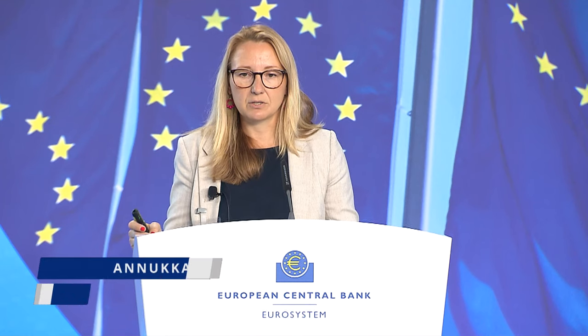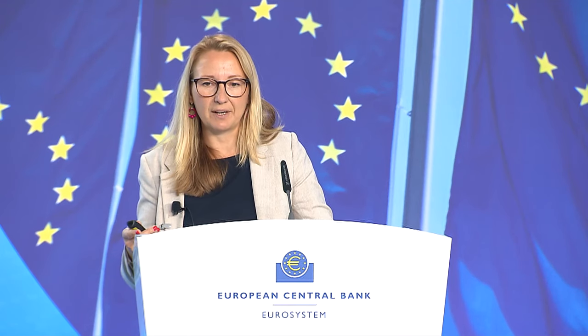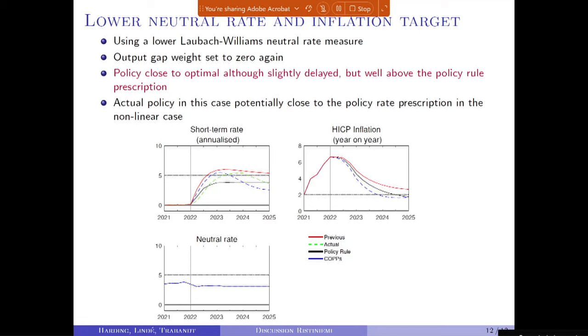Using a conservative measure of Lubik and Matthes for the nominal neutral rate going up to 4.3% — if I use a measure in between the range, that would be Laubach and Williams at around 3.6% — with the output gap weight at zero, and because the neutral rate is much lower you don't have to increase the interest rate so high. In this case, policy would be close to optimal again. The Taylor-rule-based interest rate is much lower than the actual rate, suggesting that potentially even in the nonlinear model, the rate path that the Fed has followed could have been enough already. Optimal policy then calls for a peak level similar to the actual interest rate path, but slightly more front-loaded.